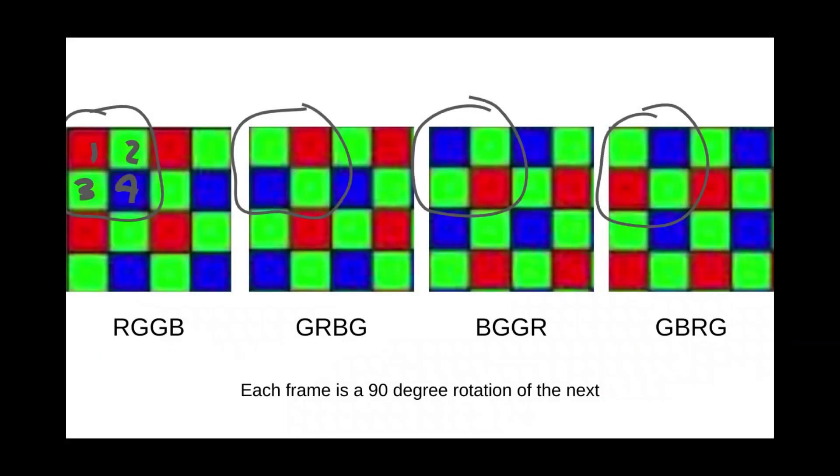The checkerboard pattern of the CMOS sensor comes in four different types: RGGB, GRBG, BGGR, and GBRG. Notice that each of these patterns are just 90 degree rotations of each other. Also notice that with all of these patterns, 50% of the pixels are green, 25% are red, and 25% are blue. This is because the human eye sees green better than any other color.